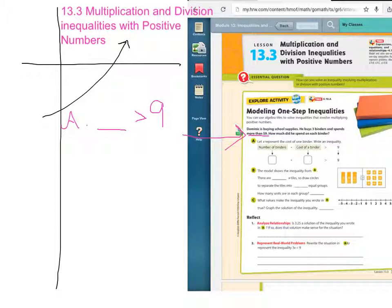Now how many binders did he buy? He bought three. And how much does each one cost? We don't know, but we know that when we take it times three, it's going to be more than nine. Let's see, they tell us here, let x represent the cost of one binder. So we're going to put an x here. 3x is going to end up being greater than nine. If you take out the x and put a three, that would mean three times three, which is equal to nine. So you need to understand that x will end up being more than three.